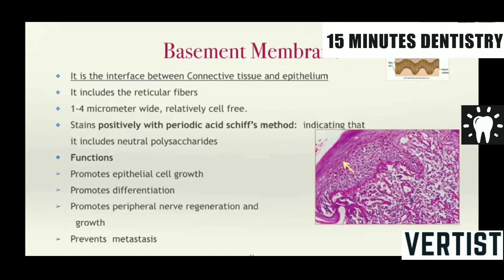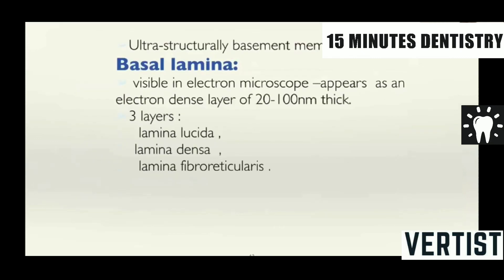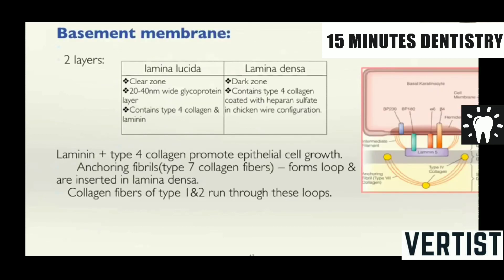The interface between the oral epithelium and the connective tissue is a layer called the basement membrane. It includes the reticular fibers present here. It is almost 1 to 4 micrometers in width. And because there is a high level of neutral mucopolysaccharides, saccharides and lipoproteins present here, they positively stain with the periodic acid-Schiff stain. Ultrastructurally, the basement membrane is called as the basal lamina. It is visible in the electron microscope, appears as an electron-dense layer, and there are basically three layers present here: lamina lucida, lamina densa and lamina fibroreticularis.